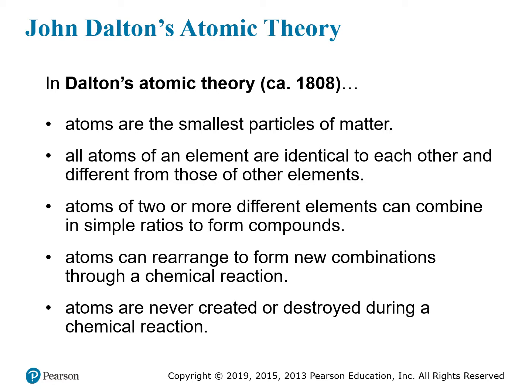All atoms of an element are identical to each other — this is a very important part of Dalton's atomic theory. All of the atoms of aluminum are identical to one another, and all of the atoms of carbon are identical to one another, but the atoms of aluminum are somehow different from the atoms of carbon. Dalton didn't know exactly what this difference was, but he knew from experiments that there had to be some difference. Atoms of different elements can combine together in simple whole number ratios.